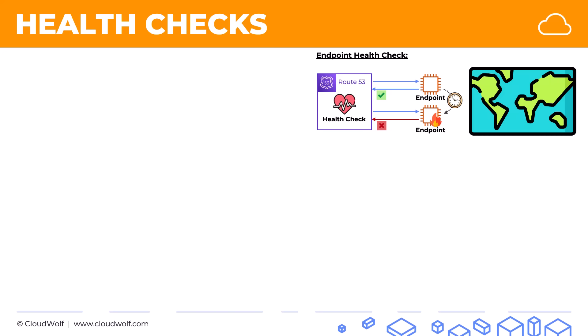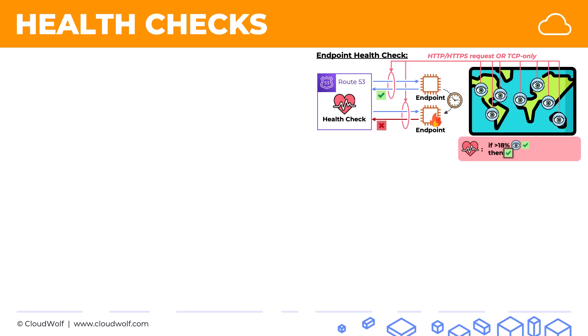How does that happen? Well, in the background you have all these checkers around the world. They are the ones monitoring — they're sending HTTP or HTTPS requests, or you can set it up to be TCP-only requests to this endpoint. They're doing so every 30 seconds, and for a health check there will be 15 checkers assigned. So you have 15 checkers each sending requests every 30 seconds. They're not coordinated in terms of their time, so it kind of comes at random overall. The way it works is: if more than 18% of the checkers get a valid response, or are able to establish that connection and see the instance as healthy, then it is considered healthy. If less than or equal to 18% of them get a response, then it's unhealthy.